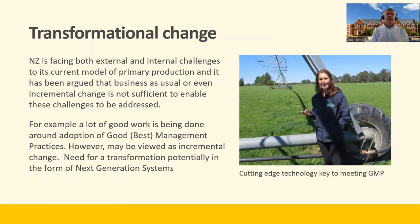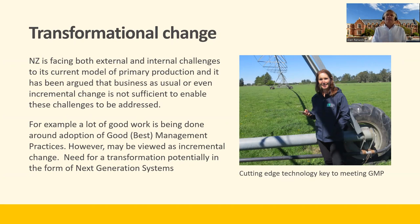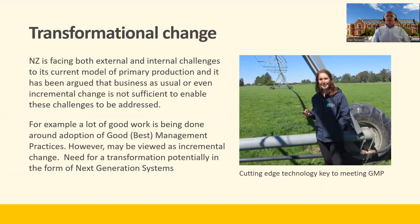We can see we have a whole combination of environmental problems which suggests that our current agricultural systems may not be sustainable into the future. New Zealand is facing both external and internal challenges to its current model of primary production, and it's been argued that simply carrying on as we are, or even making small changes, is not going to be sufficient to address these challenges. There's lots of talk about sustainable intensification and adopting best management practices, but these could be viewed as incremental changes, which may not be enough.